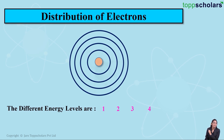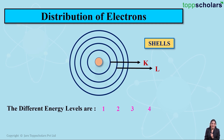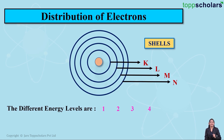All these orbits have different energy levels and are called shells, represented by certain letters. The first orbit, energy level one, is the K shell. The second orbit, energy level two, is the L shell. The third orbit, energy level three, is the M shell. And the fourth orbit, energy level four, is the N shell. So we have four shells with different energy levels named K, L, M, and N.